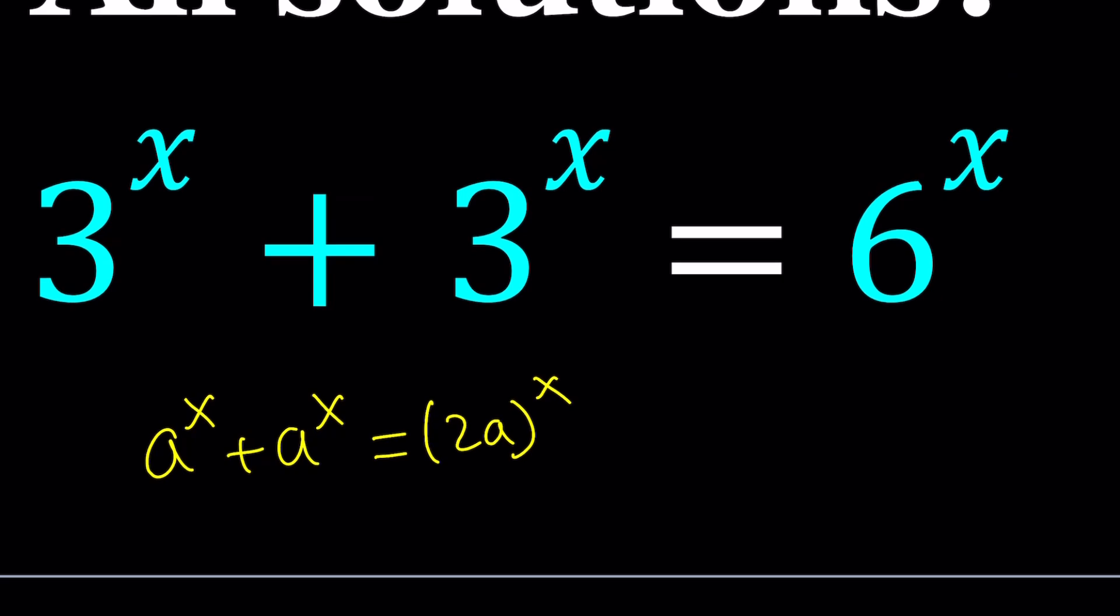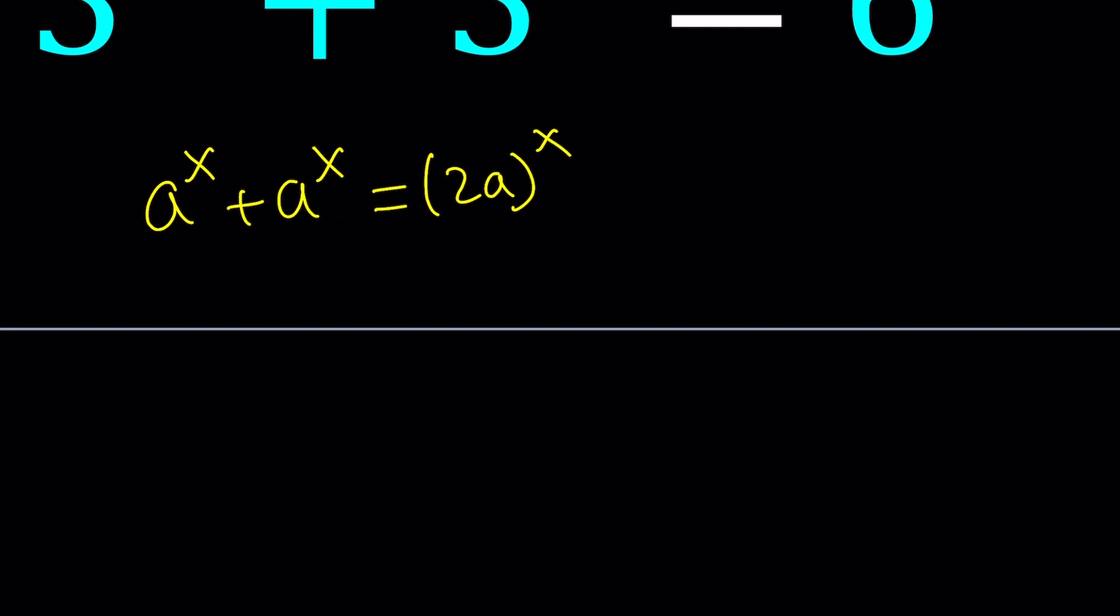But we're going to do the following. We have the 3 to the power x twice, right? So we're going to write it as 2 times 3 to the power x, which is equal to 6 to the power x.